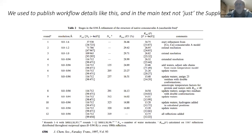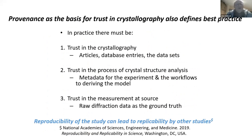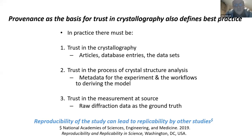The basis for trust — and the word provenance is very important here — is core to defining best practice. For best practice, there must be trust in the crystallography: the articles, the database entries, the datasets, and trust in the process. The metadata for the experiment and the workflows for deriving the model are paramount. I recall John Westbrook stressing the importance of metadata for raw data in one of our early workshops for the IUCr diffraction data deposition working group — and it's a great loss to the community that we've lost John Westbrook recently.